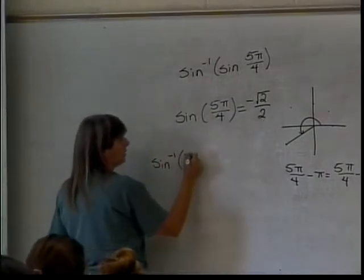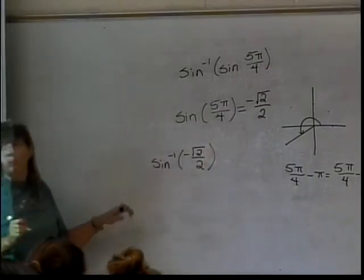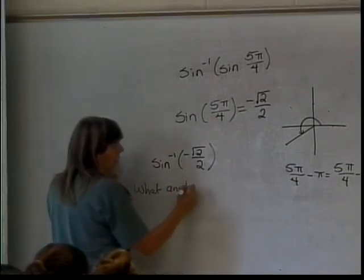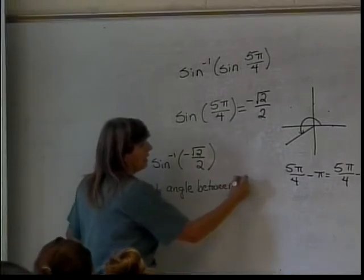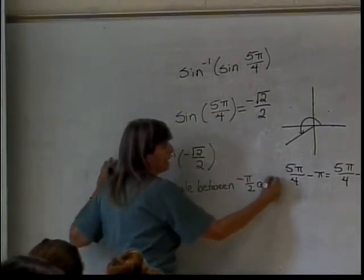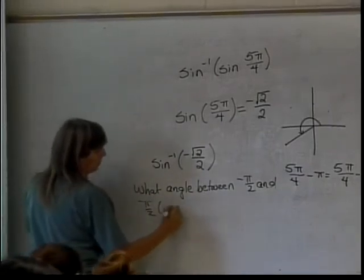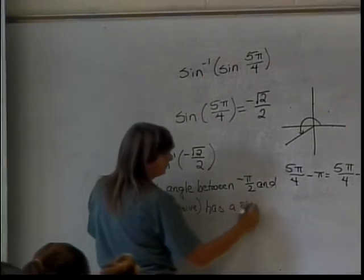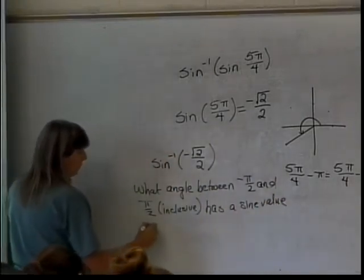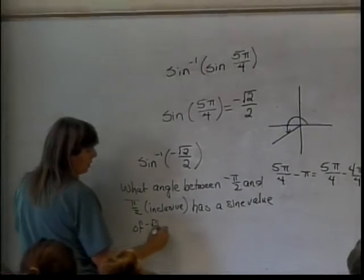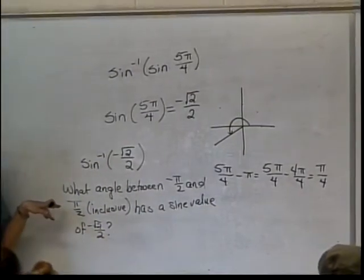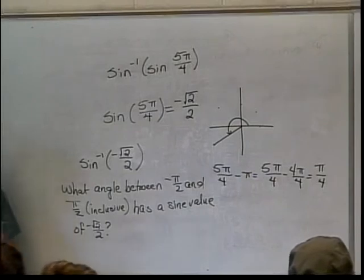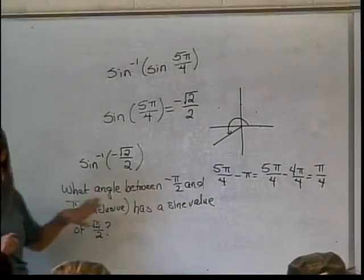Now, sine inverse of this thing, negative square root of 2 over 2. What is the question I ask myself here? Remember, it is what angle between negative pi over 2 and pi over 2 inclusive has a sine value of negative square root of 2 over 2. So am I going to be in, where am I going to be if my sine value is negative? What quadrant am I going to have to be in? I'm going to have to be in quadrant 4, because I have a choice of only from negative pi over 2 to pi over 2, so it's only quadrants 1 and 4.